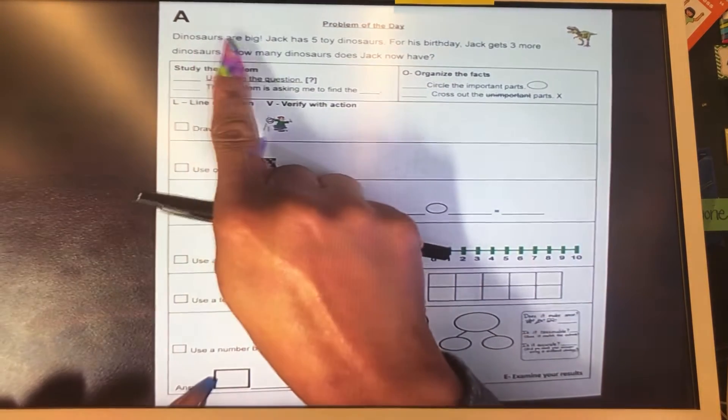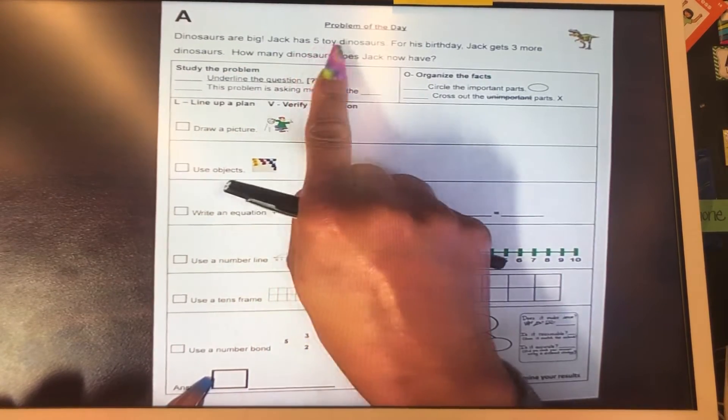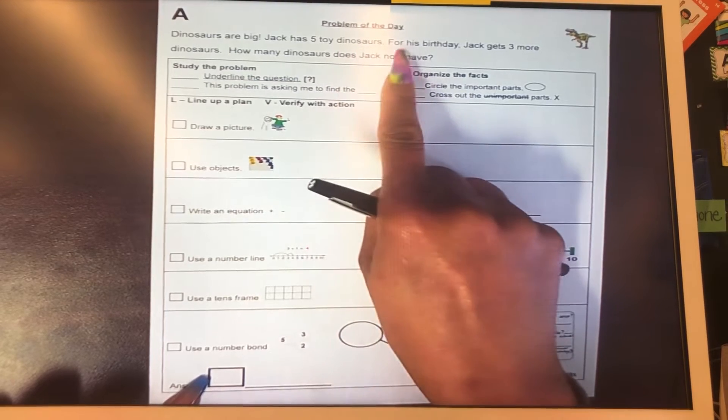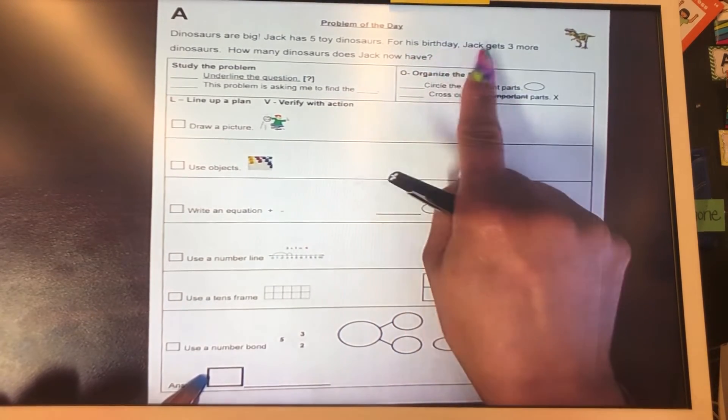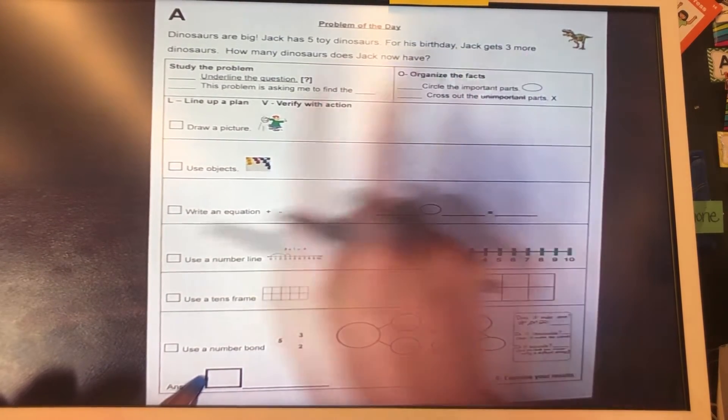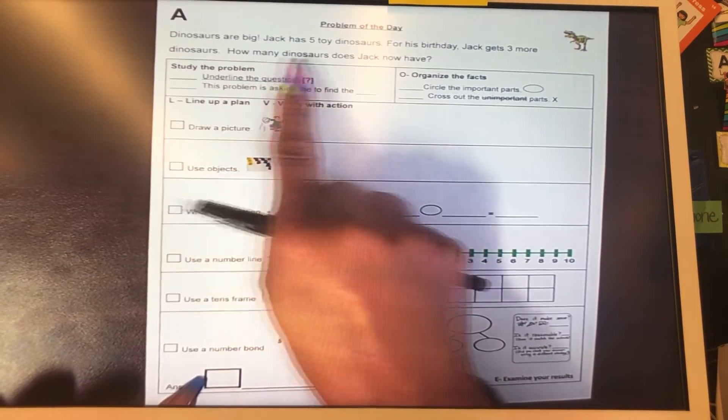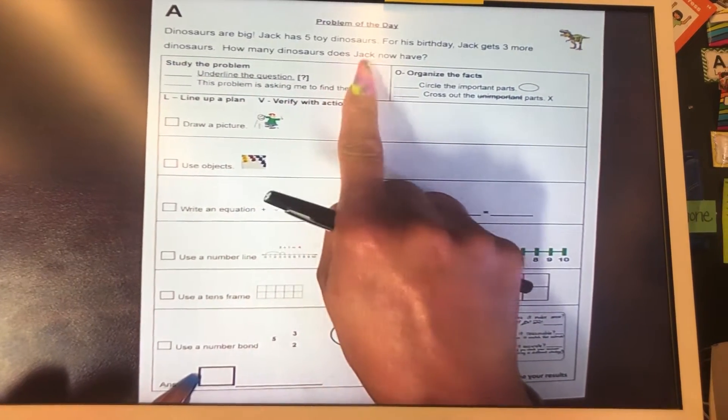Dinosaurs are big. Jack has five toy dinosaurs. For his birthday, Jack gets three more dinosaurs. How many dinosaurs does Jack now have?